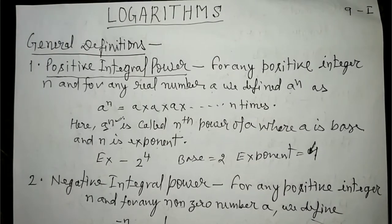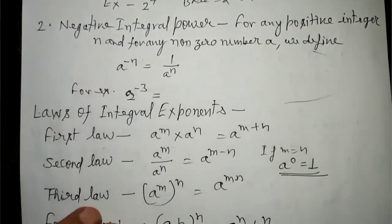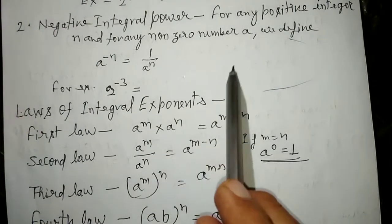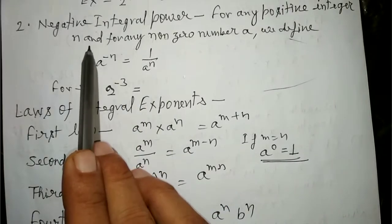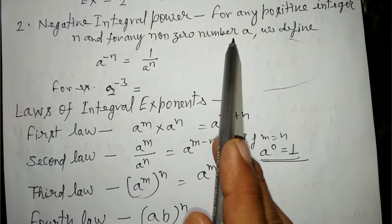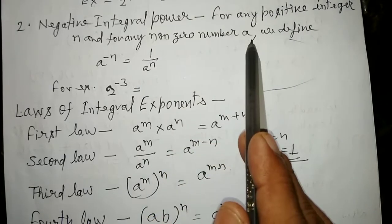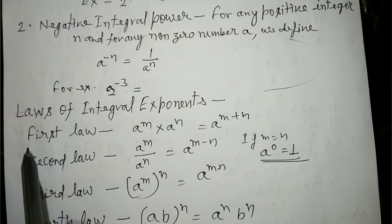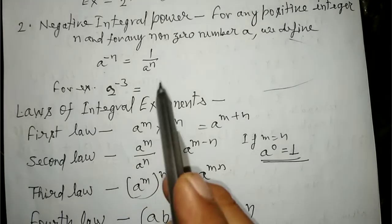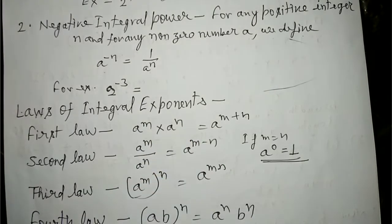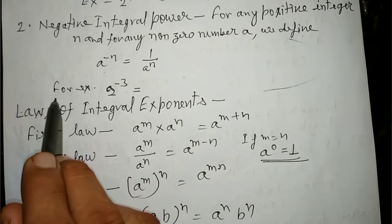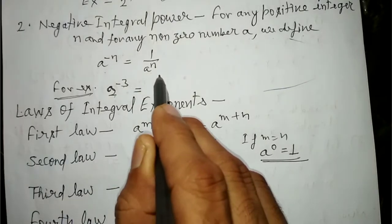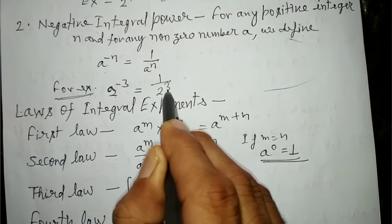इसके बाद में negative integral power: for any positive integer n and for any non-zero number a, we define a to the power minus n. A की power minus में दी गई है — इसको positive power में change करने के लिए one upon a to the power n लिखते हैं। Example के लिए, two to the power minus three को positive number में change करने के लिए one upon two cube हो जाएगा।